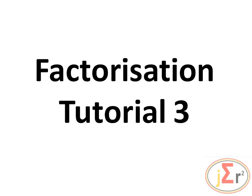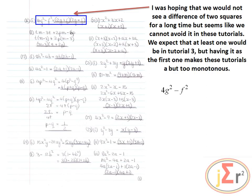Richard James will present Factorization Tutorial 3. I was hoping that we would not see a difference of two squares for a long time, but it seems like we cannot avoid it in these tutorials. We expect that at least one would be in Tutorial 3, but having it as the first one makes these tutorials a bit monotonous. We have quite a few difference of two squares from Tutorial 1 all the way through Tutorial 3 — I remember a single tutorial with at least six of them. Let us see how many we have here.